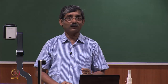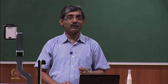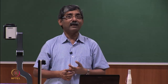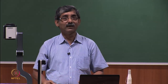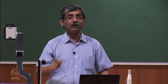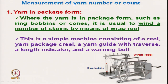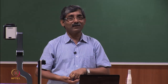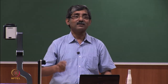Our aim is to get the actual length of the yarn. If the traverse is not there, we will get a slightly higher length than intended. A length indicator measures the count not by measuring yarn directly, but by the number of rotations of the wrap reel. If the wrap reel has a fixed circumference — say 1.5 yards — then a lee of 120 yards requires 80 turns.